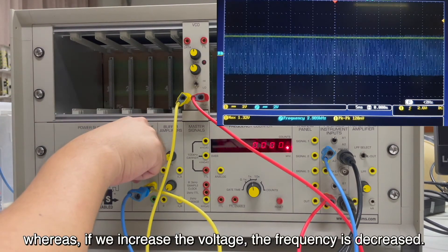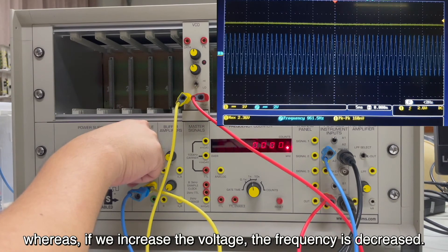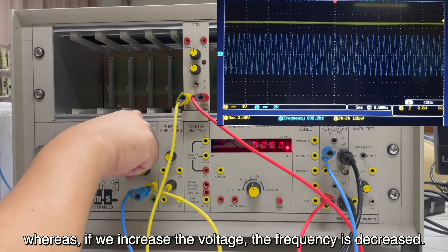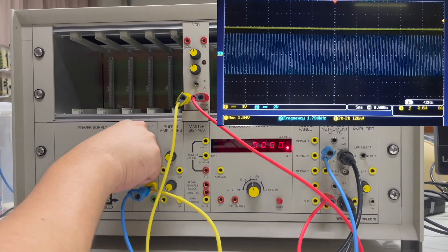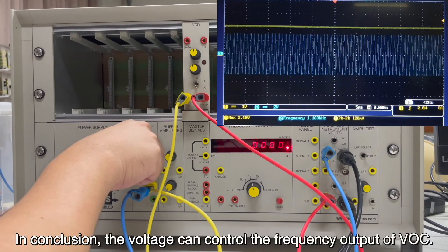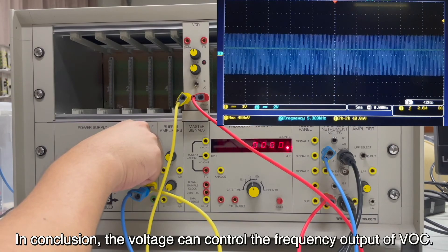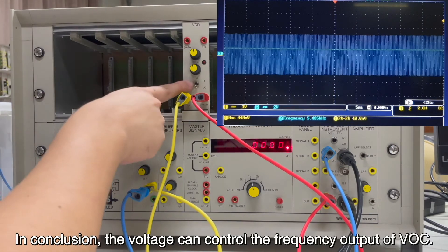Whereas, if we increase the voltage, the frequency is decreased. In conclusion, the voltage can control the frequency output of VCO.